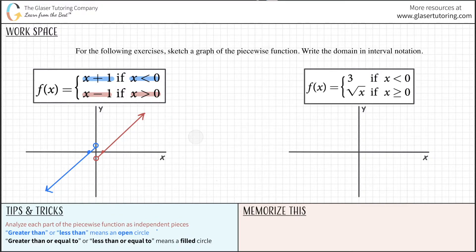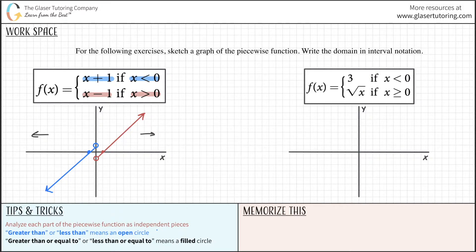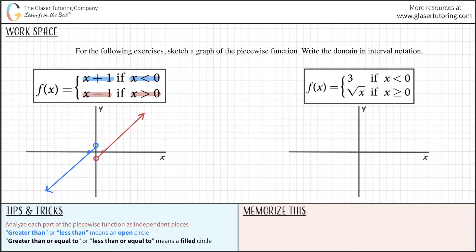Now it also asks us for the domain in interval notation. We need to find the leftmost and rightmost parts of the graph, assuming all points in between are filled in. We notice one issue: when x is 0, there is no y value obtained because x is never equal to 0. So we really have two individual domains — one for each component — which we then combine.